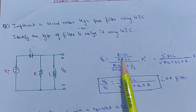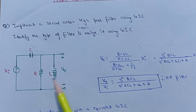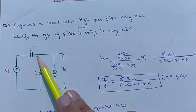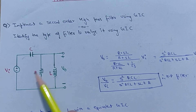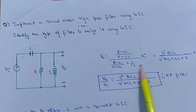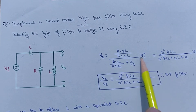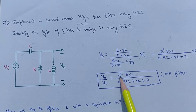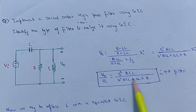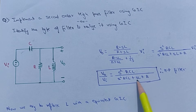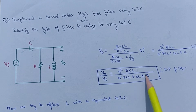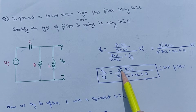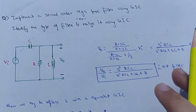The impedance between these two terminals will be the parallel combination of R and L: R·SL / (R + SL). The total impedance will be the series combination of this capacitor combined with R and L. If you simplify this circuit, you get V0/Vi = S²/(RCL) / [S²/(RCL) + SL + R]. As the numerator contains an S² term, therefore this will be a high pass filter.